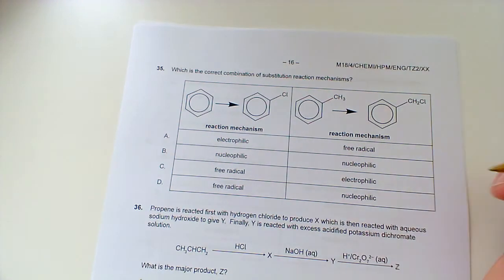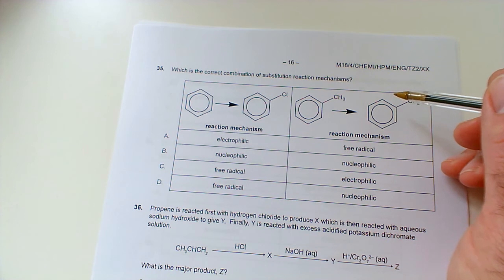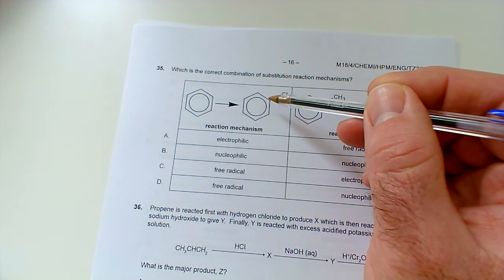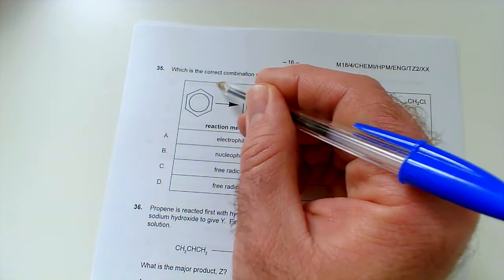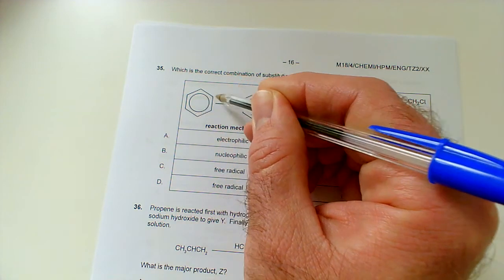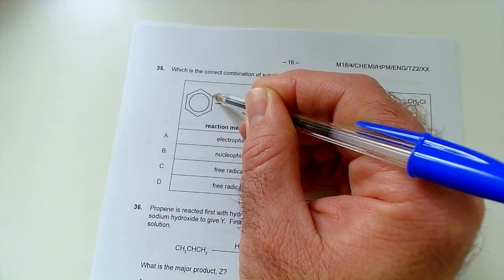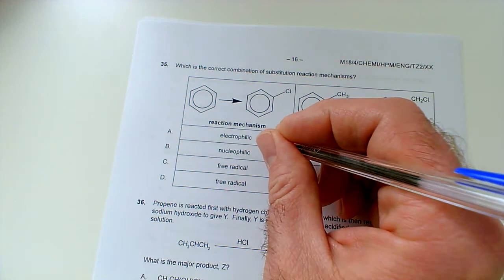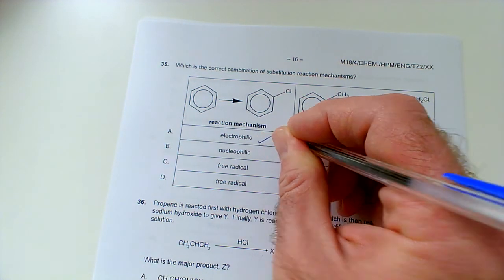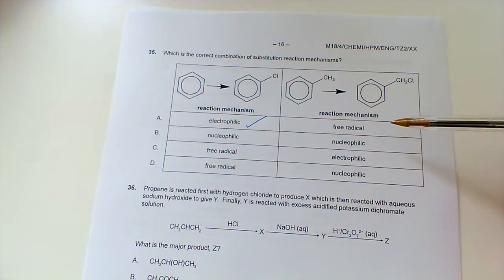36. Which is the correct combination of substitution reaction mechanisms? Well, here, we've got benzene undergoing electrophilic aromatic substitution. You need to know that. But, of course, you know, so like it grabs a chlorine, you get the horseshoe shape, and then it loses a hydrogen ion to get the delocalized ring of electrons back again. So, that would be electrophilic aromatic substitution.